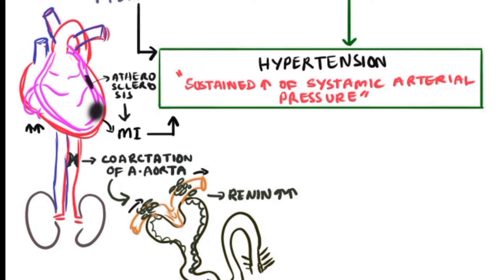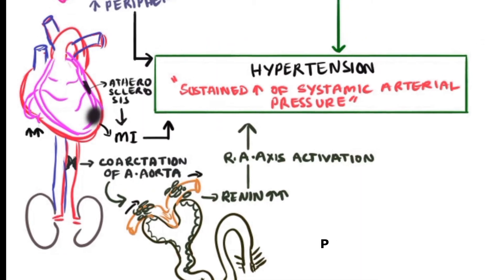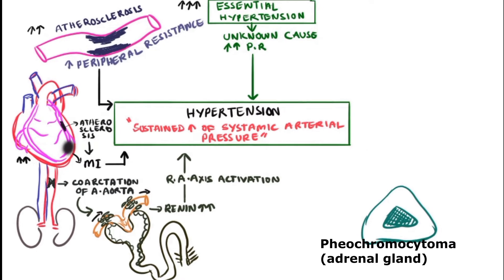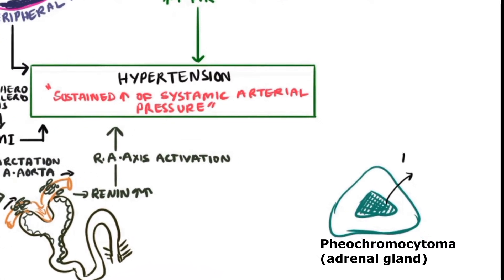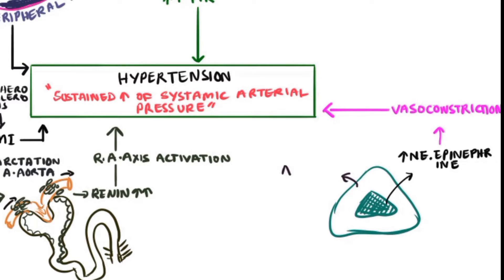Renin is an enzyme which activates the renin-angiotensin axis, thereby further increasing hypertension. Pheochromocytomas, small adenomas, lead to abnormal secretion of norepinephrine and epinephrine catecholamines, which act on the alpha and beta subunits of catecholamine receptors on blood vessels, leading to severe vasoconstriction and further hypertension.